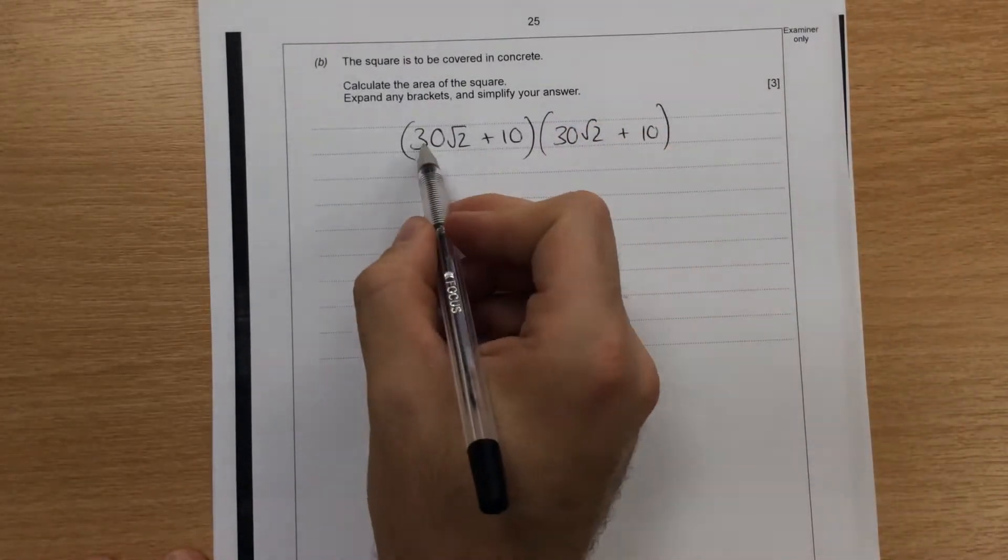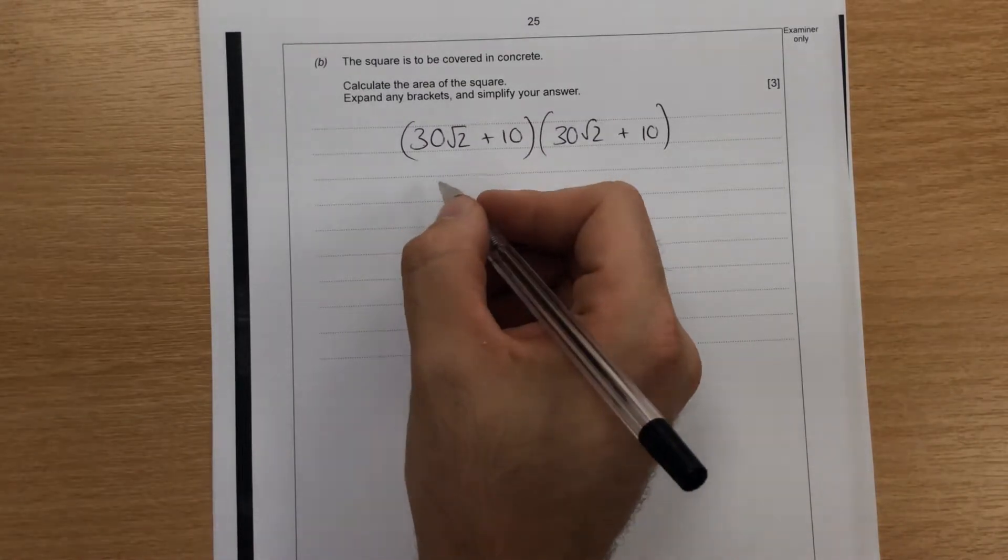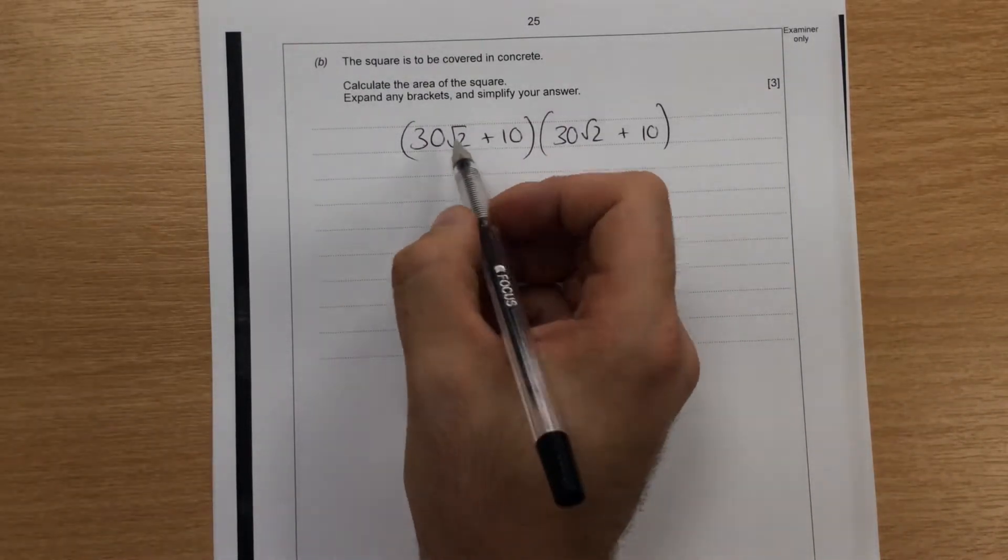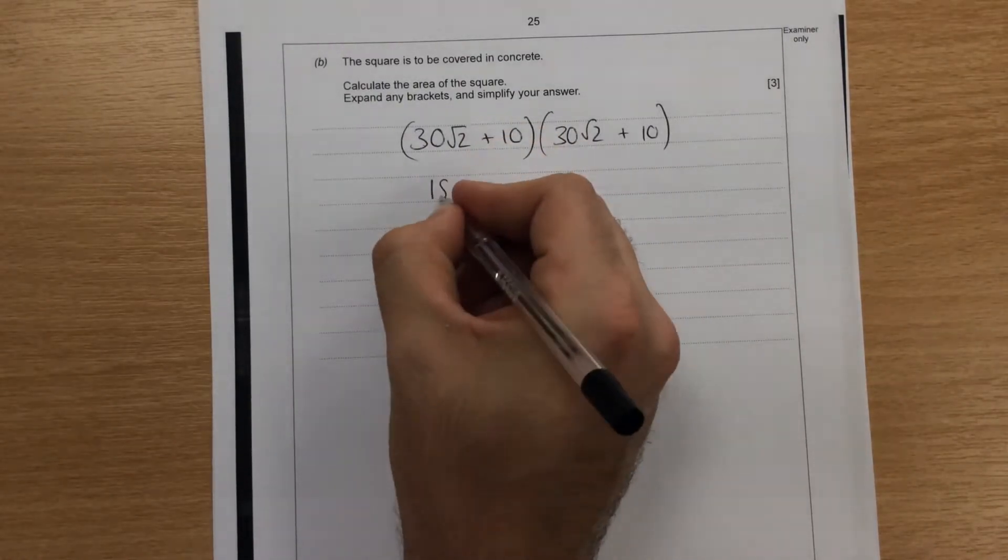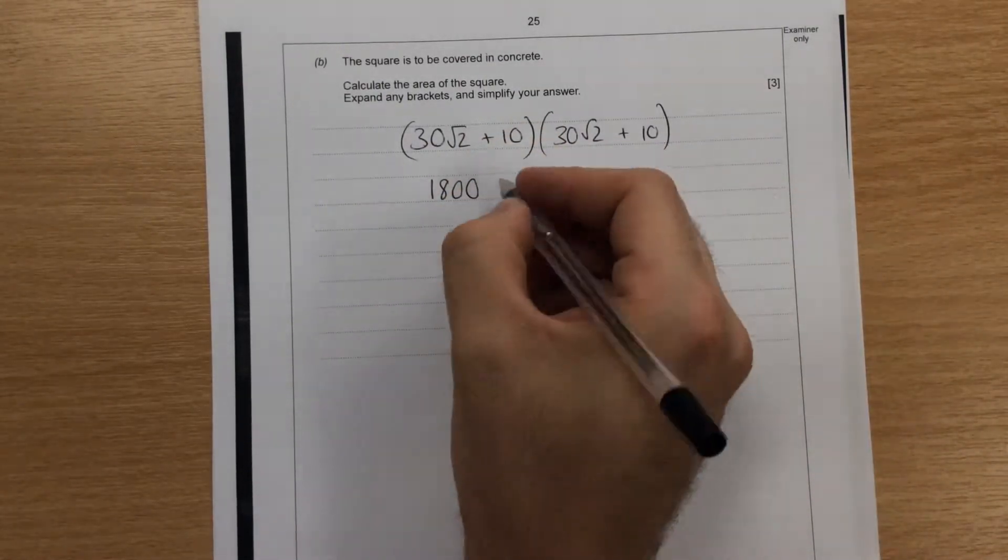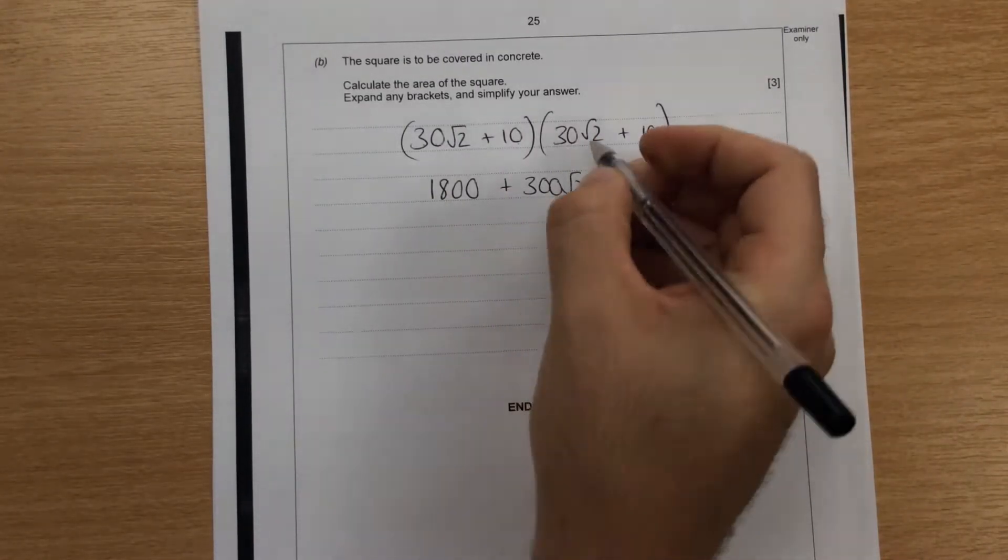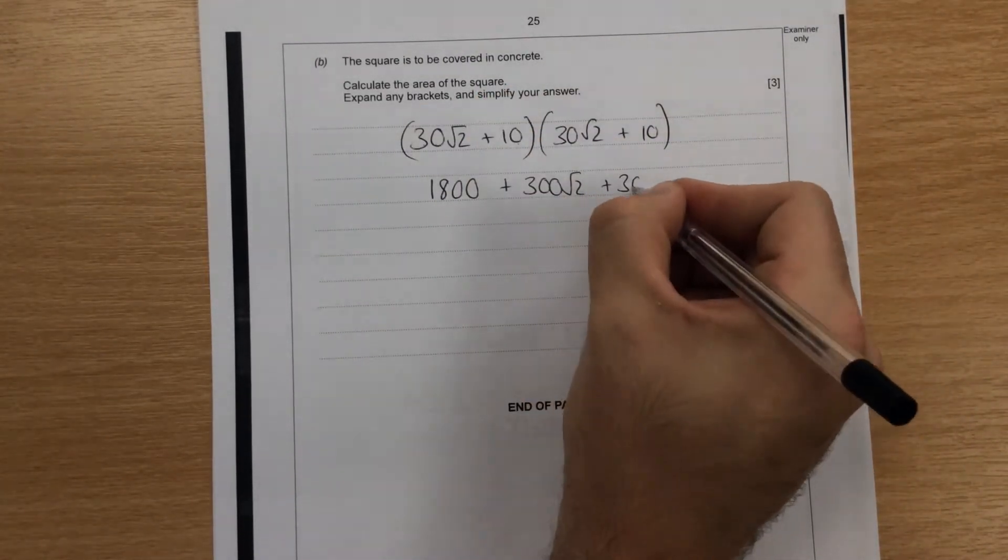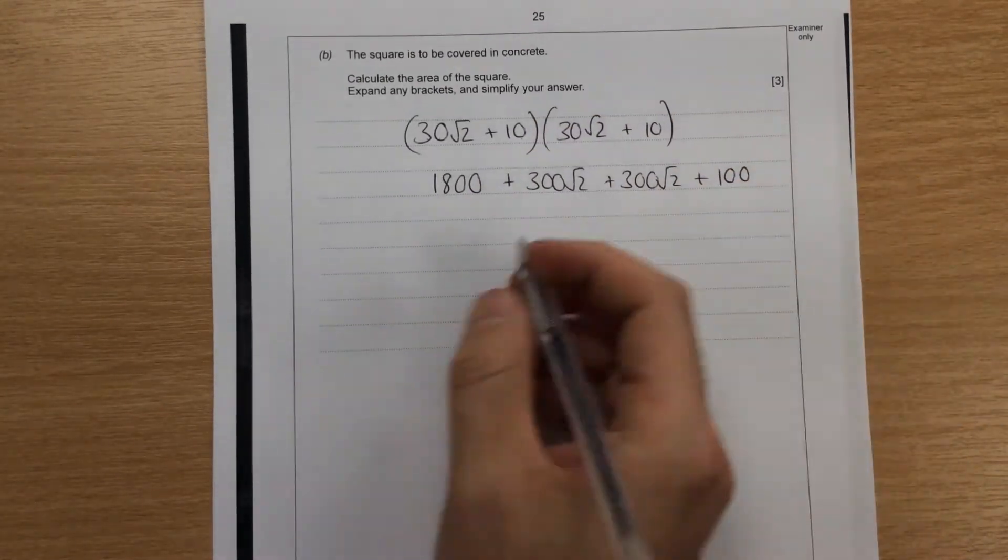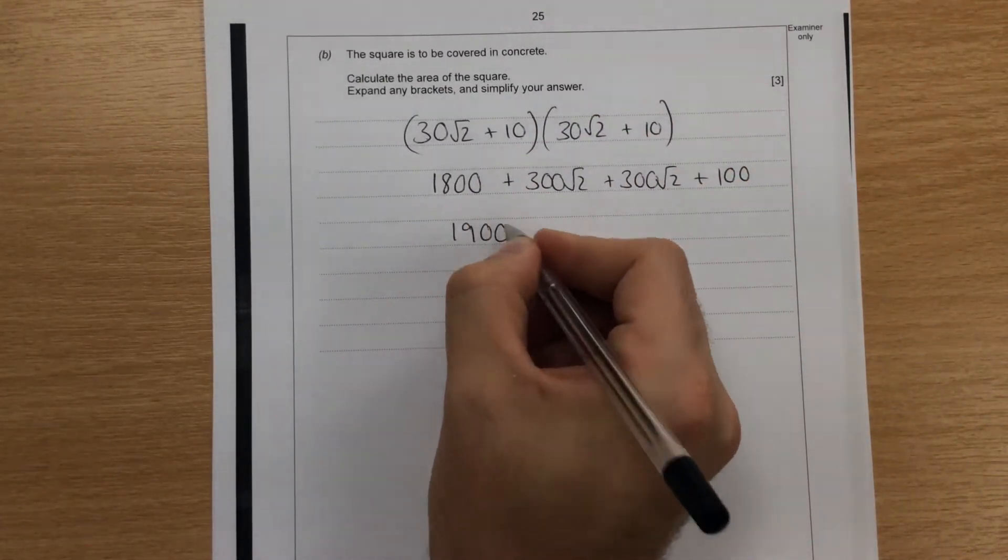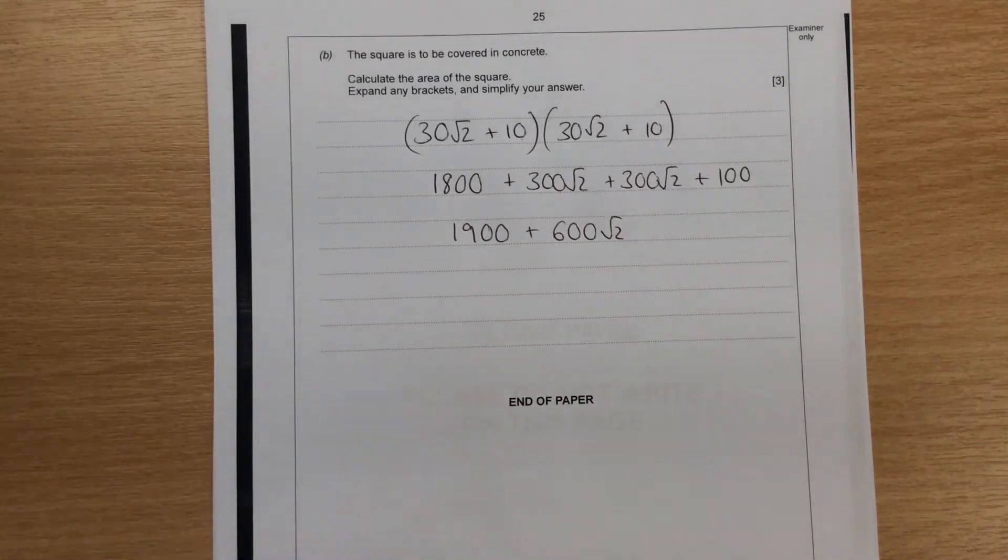And then we're going to do 30 root 2 times 30 root 2. So we're just going to do FOIL. So we're going to end up with 900 times by root 2 times by root 2, which is 2. So we're going to end up with 1,800 plus 10 times that, 300 root 2. Same again, another 300 root 2. And then 100 on the end. So we're going to end up with 1,900 plus 600 root 2. And that is the final answer.